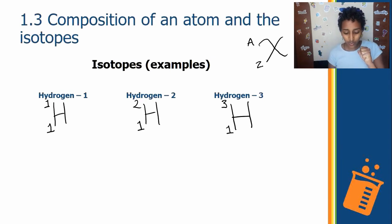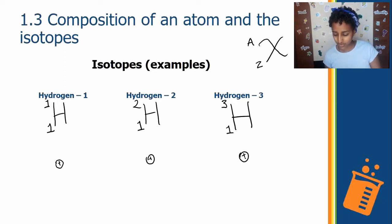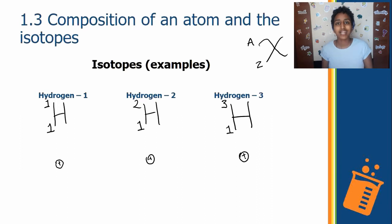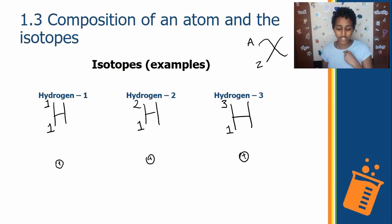We know there is one proton — one positively charged particle in the center of each of them — because the atomic number is 1, meaning there is one proton in all three isotopes. Atomic numbers don't change; it's the mass number that changes.